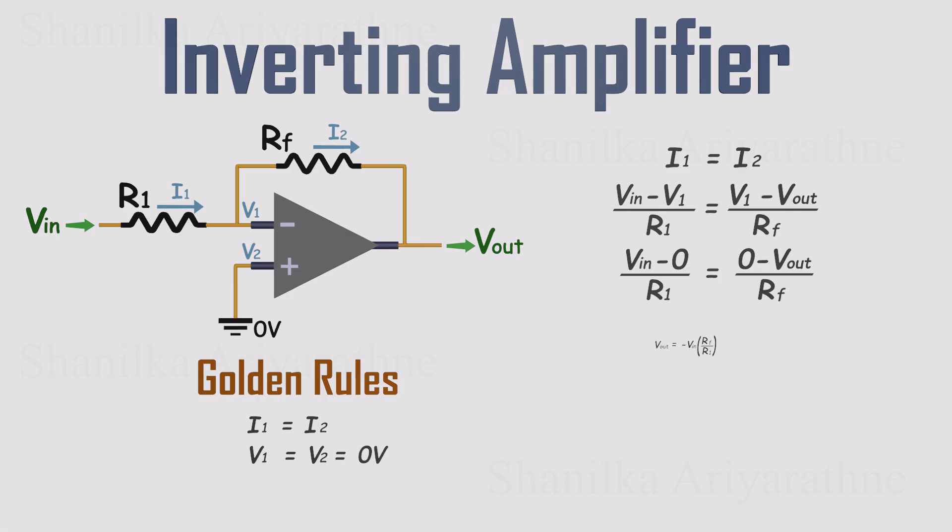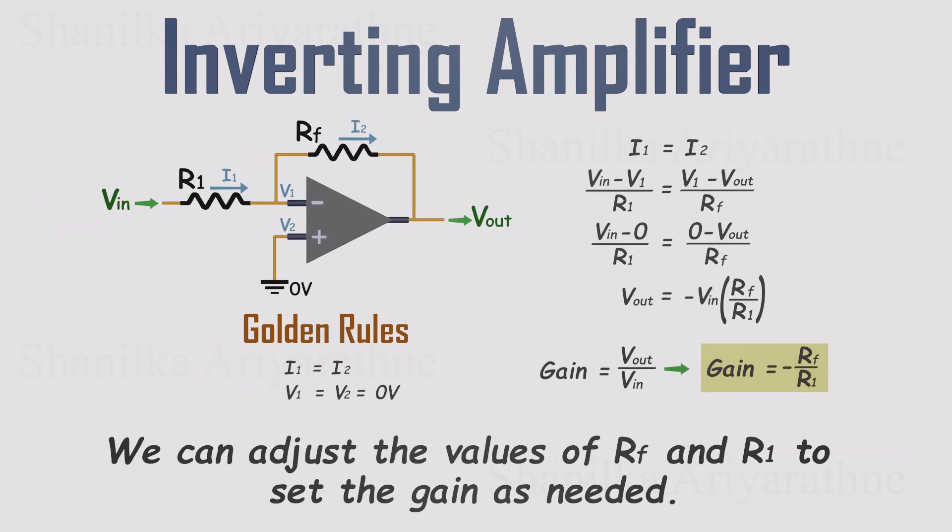That simplifies things nicely. Vout equals Vin multiplied by negative Rf over R1. From this, we can calculate the gain of the inverting amplifier. The gain is negative Rf over R1. This also means we can adjust R1 and Rf to set the gain to whatever we need. Pretty neat, right?